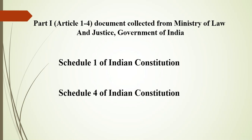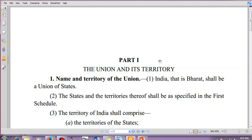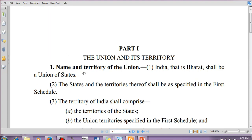We have downloaded this document from the Ministry of Law and Justice, which is the authenticated website for legal documents under the Government of India. This is the document: Part One of the Indian Constitution — the Union and its Territory. Article 1, Name and Territory of the Union, Clause 1 says: India, that is Bharat, shall be a union of states. The name Bharat is mentioned in the constitution itself.